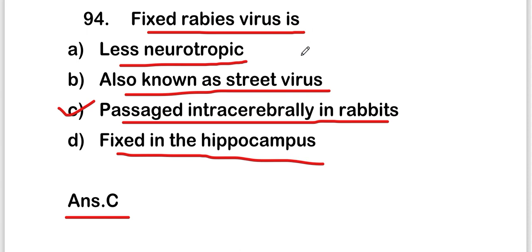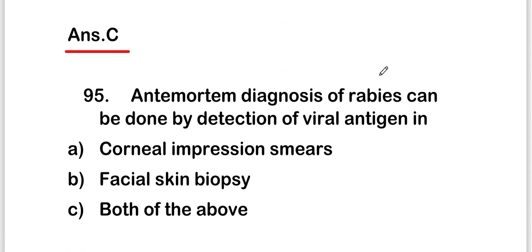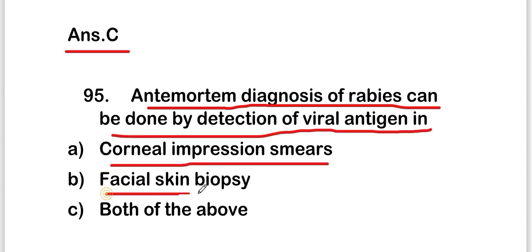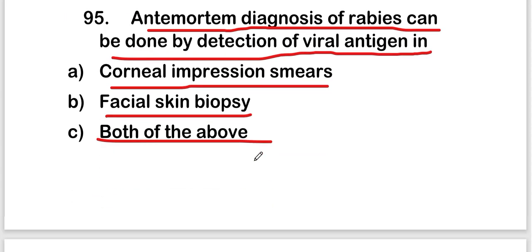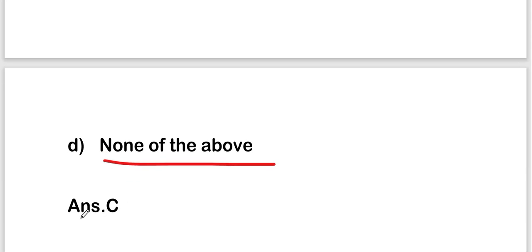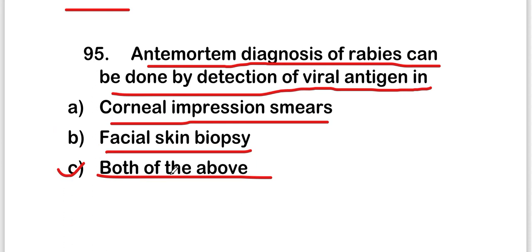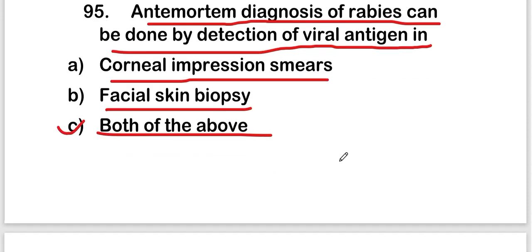The next question is: antemortem diagnosis of rabies can be done by detection of viral antigen in corneal impression smears, facial skin biopsy, both of the above, or none of the above? The right answer is option C — both of the above. Antemortem diagnosis of rabies can be done by detection of viral antigens in corneal impression smears and facial skin biopsy.